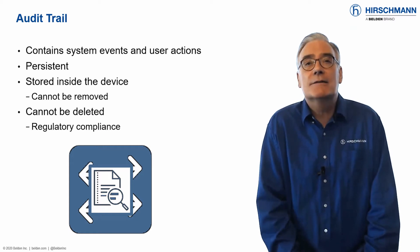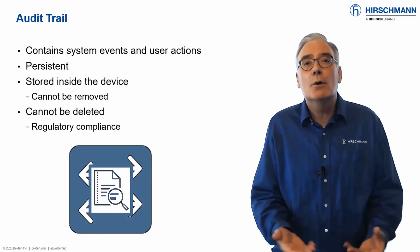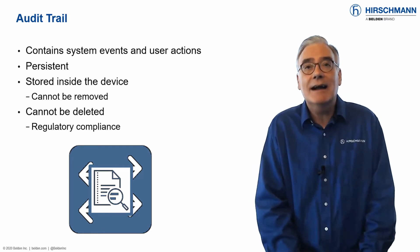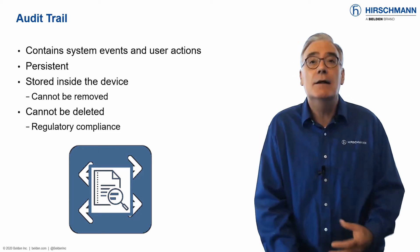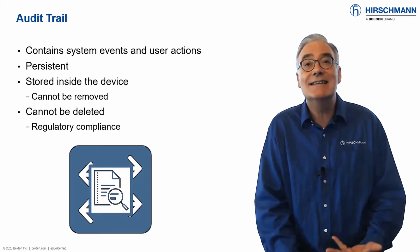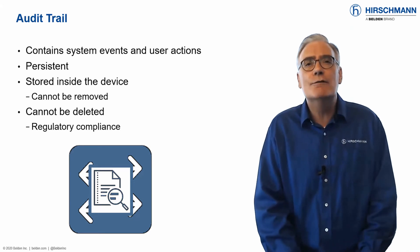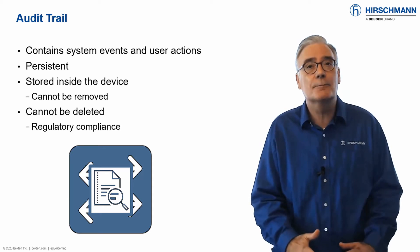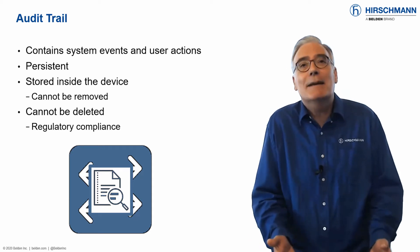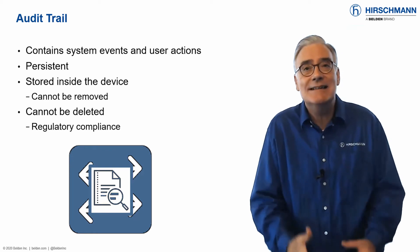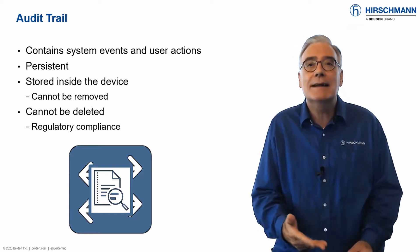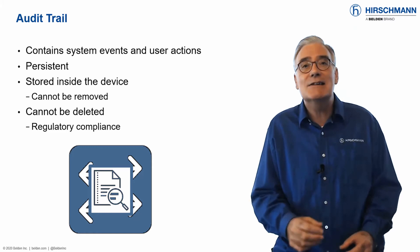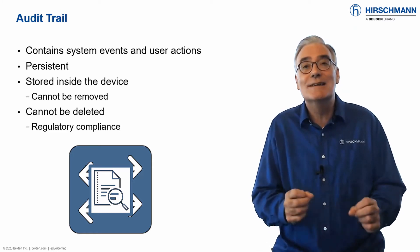Accountability is a major component of network security — in other words, who did what and when. This information is so vital that regulatory authorities often insist that documentary evidence is available. Switches use volatile memory to store events, so information is lost after a power cycle. External media can be used to store data persistently, but external memory can be stolen or its data can be erased. This method of data storage is just not persistent enough.